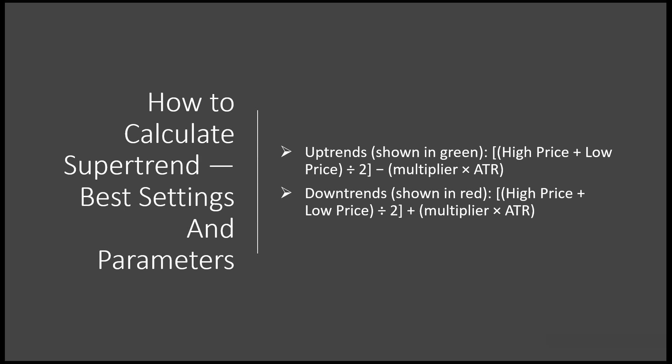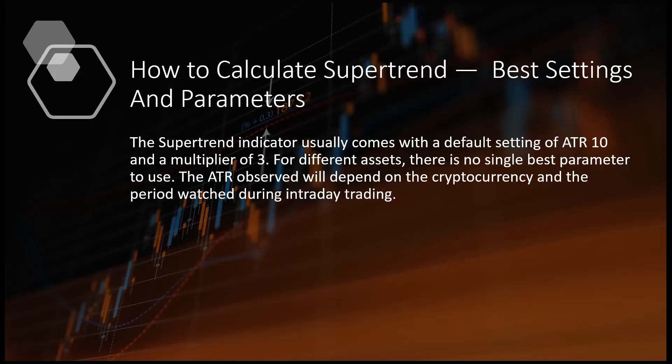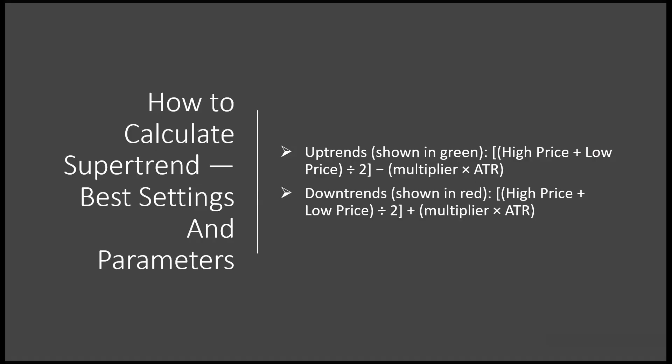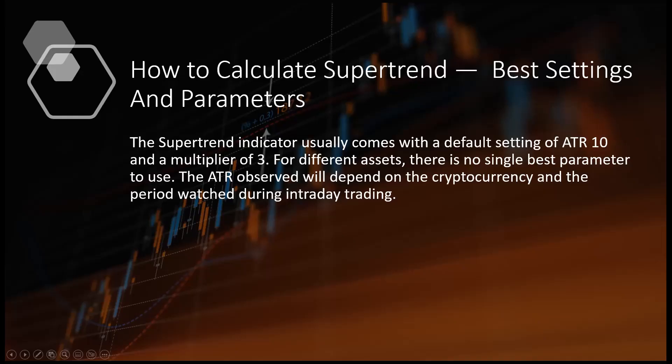The combined high and low averages are divided by 2, from which the product of the multiplier and the ATR value is subtracted for uptrends or added for downtrends. In uptrends, shown in green: (high price + low price) / 2 minus (multiplier × ATR). For downtrends: (high price + low price) / 2 plus (multiplier × ATR). The Supertrend Indicator usually comes with a default setting of ATR at 10 and a multiplier of 3.